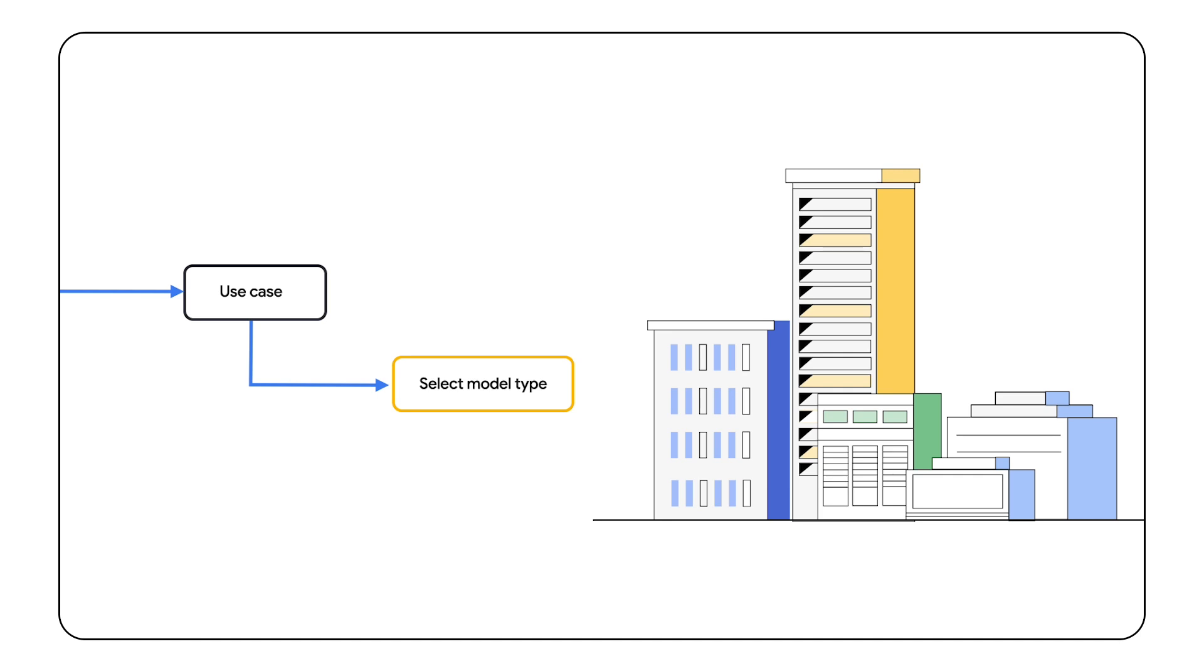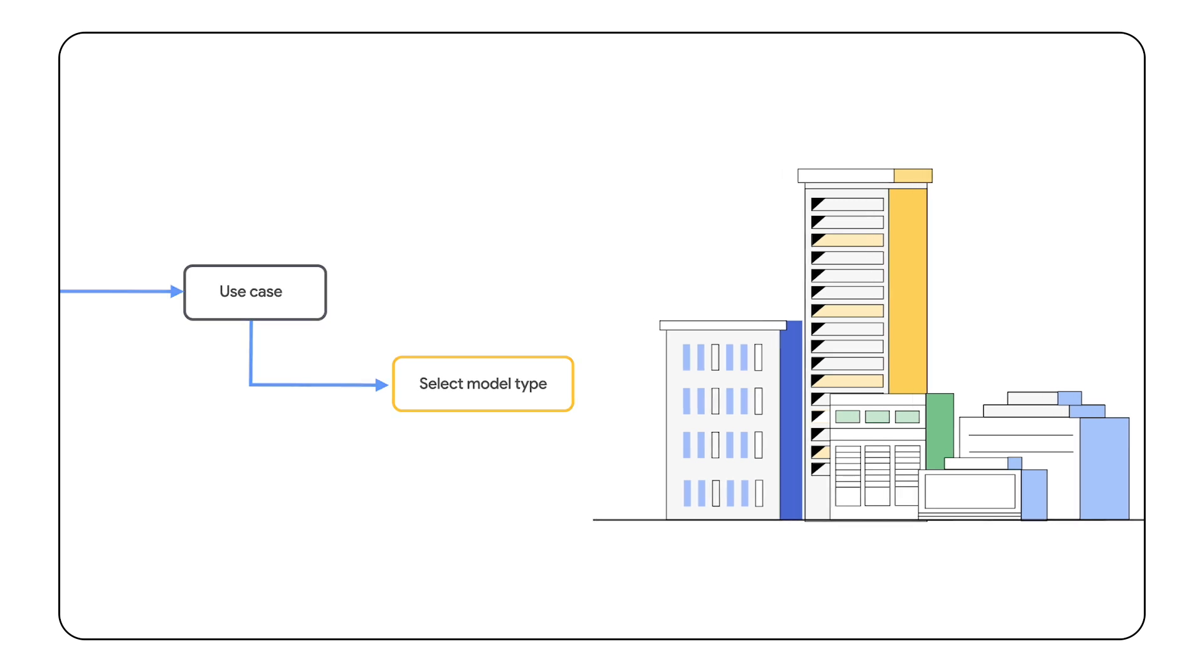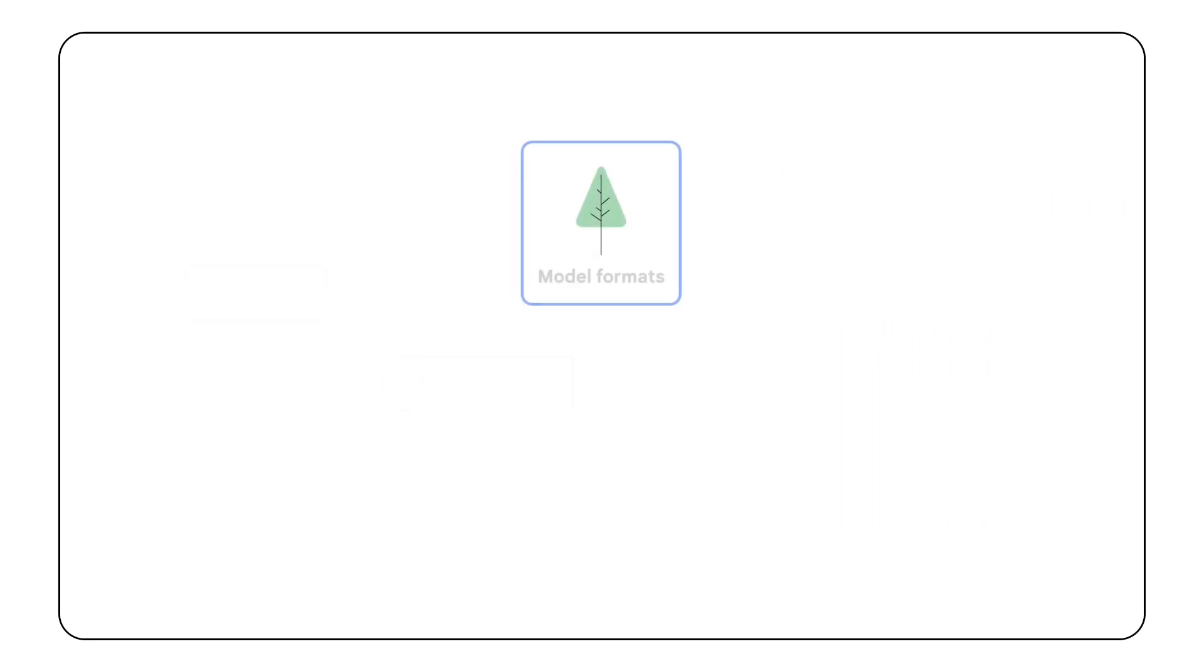The first characteristic to help you evaluate your model is deciding on the source of your model. Models can be open-source like Gemma, commercially supported like Gemini, or customized.